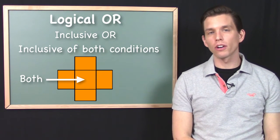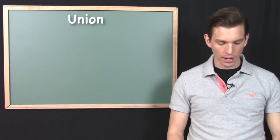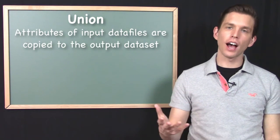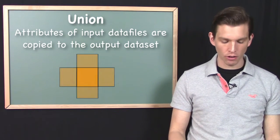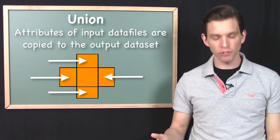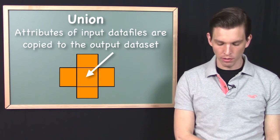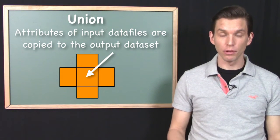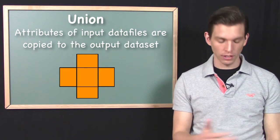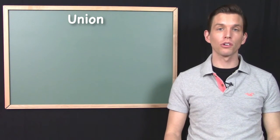Let me make a brief note about what happens to the attribute table when you conduct a union operation. Basically, the attribute information from the input data files is copied to the output file. The output features would have whatever attributes were present in the corresponding input features, and the feature in the overlapping area would have attributes from both inputs merged into it. That's how the union operation systematically manipulates the attribute table.